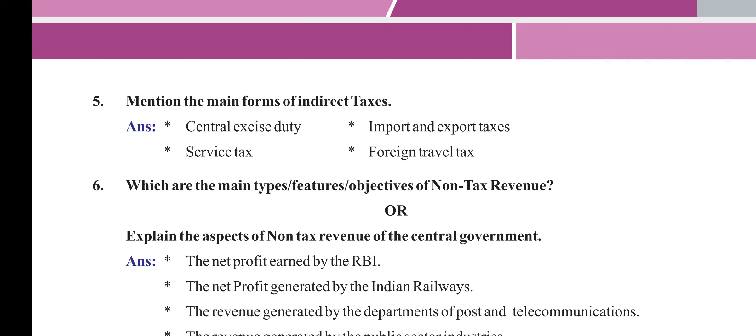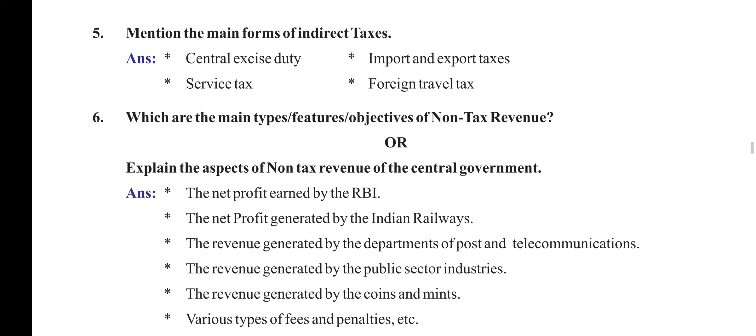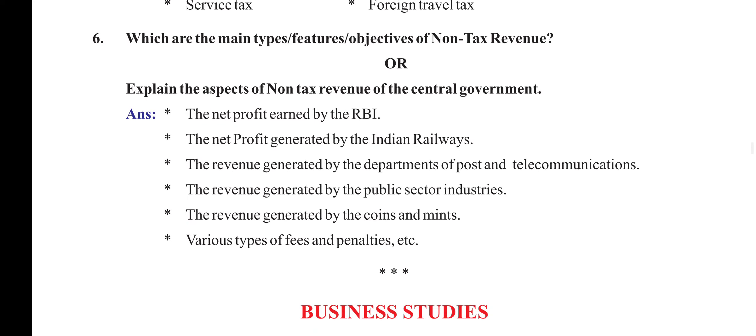Mention the main forms of indirect taxes: general excise duty, import and export taxes, service tax, and foreign travel tax. What are the features or objectives of non-tax revenue of the central government? The net profit earned by the RBI, the net profit generated by Indian Railways, revenue generated by departments of post and telecommunications, revenue generated by public sector industries, revenue generated by coins and mints, and various types of fees and penalties.